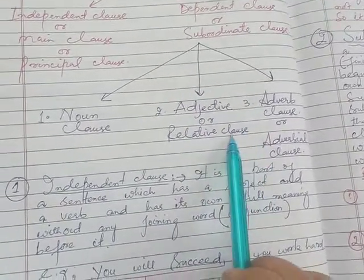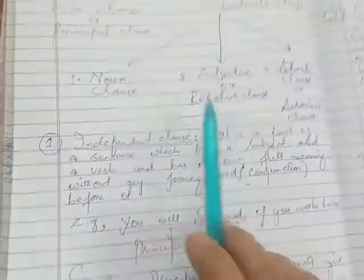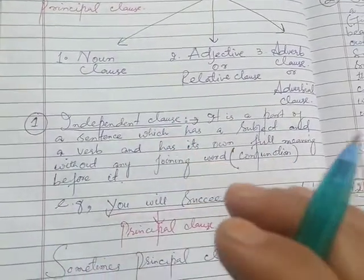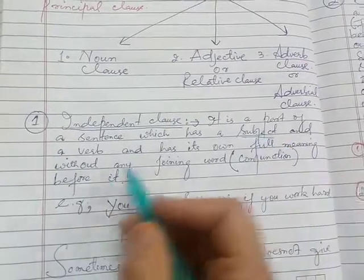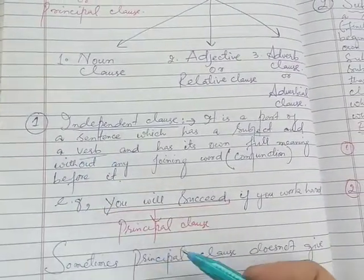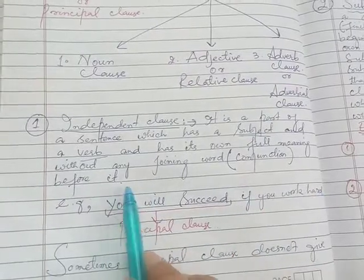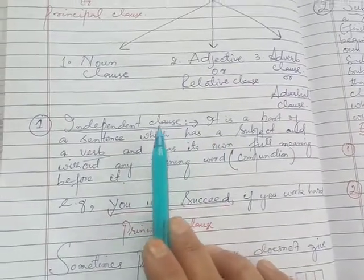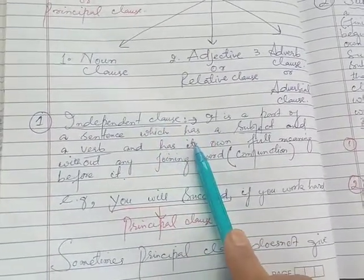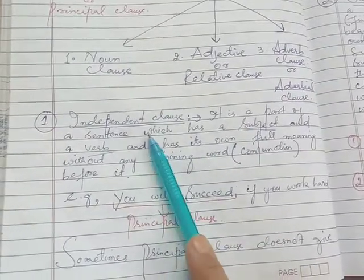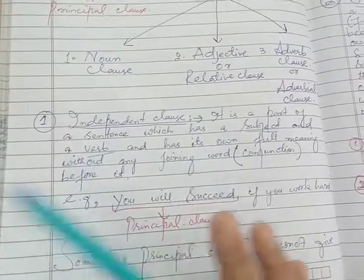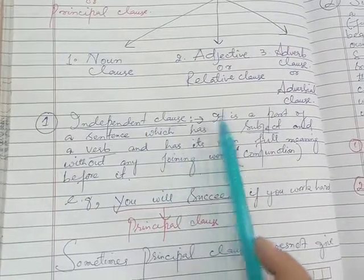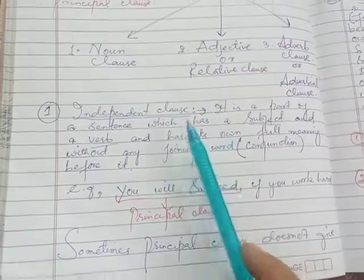The adjective or relative clause is in the syllabus of twelfth class. Now, an independent clause is a part of a sentence which has a subject and a verb and has its own full meaning without any joining word or conjunction before it. An independent clause has a subject and verb combination and its own independent existence — that's why it's called an independent clause. It does not need any conjunction or joining word.